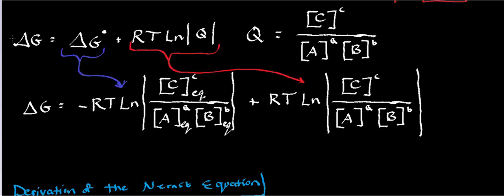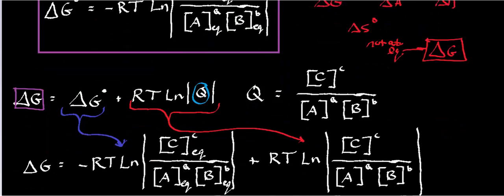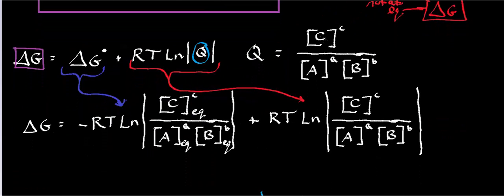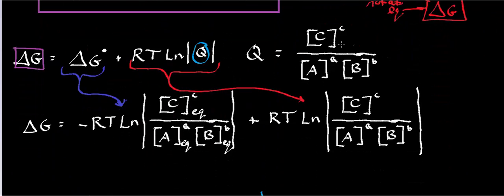To find delta G not at equilibrium — notice it doesn't have the degree sign — you take delta G standard and add a correction factor: plus RT times the natural log of Q. Q is the reaction quotient, and it is mathematically defined exactly the same way as KEQ, except Q is not at equilibrium. Notice there's no EQ subscript on the concentrations, so you're to assume this is not at equilibrium.